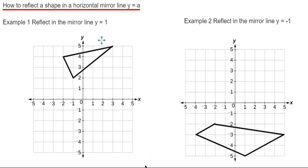Let's look at example 1 then. First of all, we've got to reflect the triangle in the mirror line, y equals 1. So y equals 1 is a horizontal line going through the y-axis at 1. Let's draw this line in.